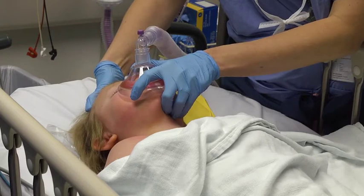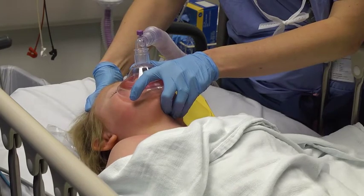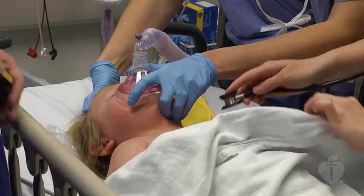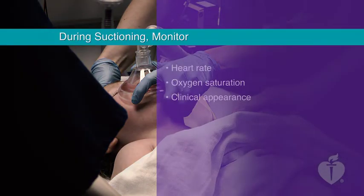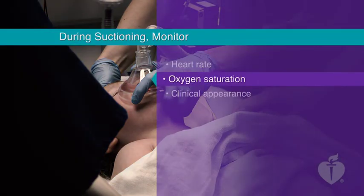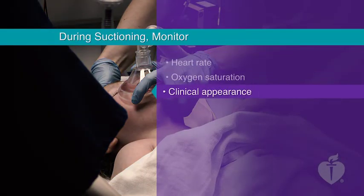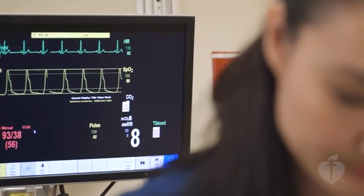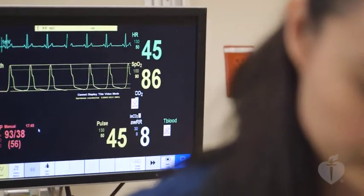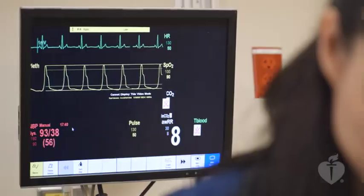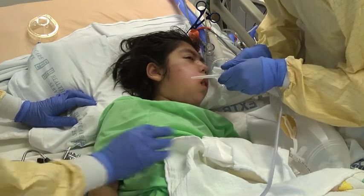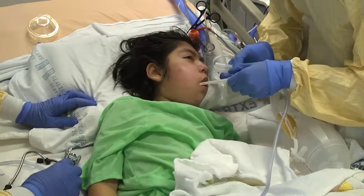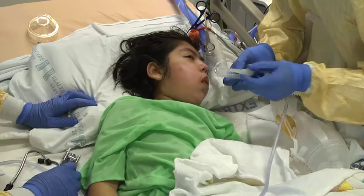You may give short periods of 100% oxygen immediately before and after each suctioning attempt. Monitor the child's heart rate, oxygen saturation, and clinical appearance during suctioning. In general, if bradycardia develops or clinical appearance deteriorates, interrupt suctioning and deliver oxygen and bag mask ventilation if needed, until the heart rate and clinical appearance return to normal.